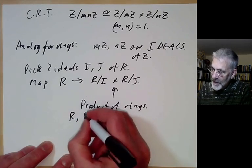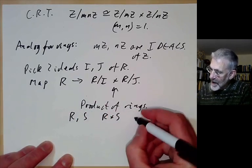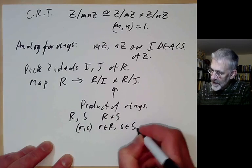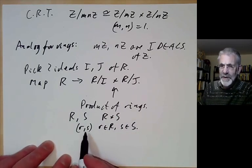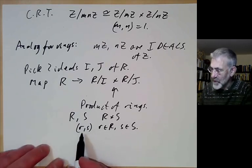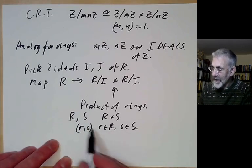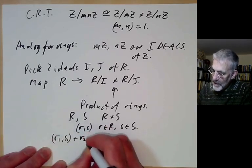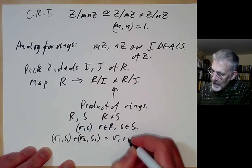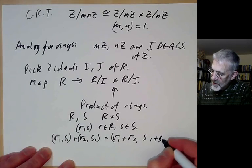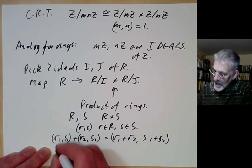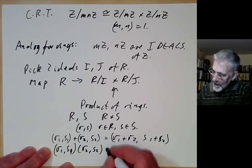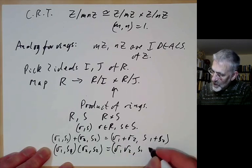This is a product of rings. A product of rings R × S is the set of all pairs (r, s) with r in R and s in S — this is an ordered pair, not ideal generation. Addition and multiplication are defined componentwise: (r₁, s₁) + (r₂, s₂) = (r₁ + r₂, s₁ + s₂), and (r₁, s₁)·(r₂, s₂) = (r₁r₂, s₁s₂). You can figure out what the 0 and 1 of this ring are.